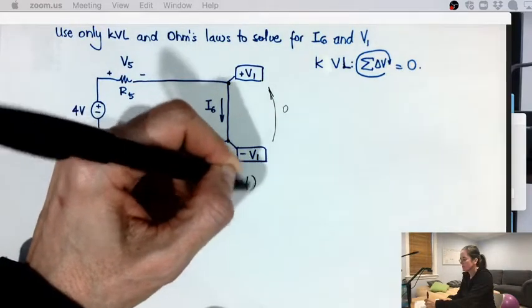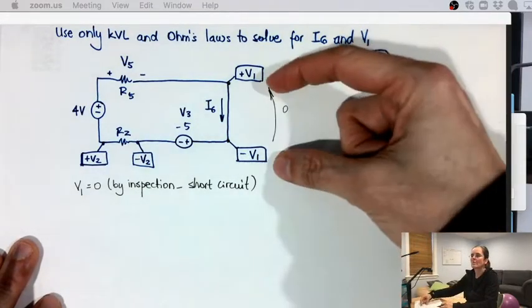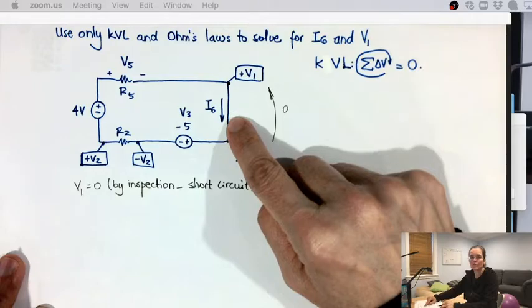Now the current, if you say I6 is zero, that's the problem. So in a short circuit, the voltage drop is zero, but the current is not necessarily zero.